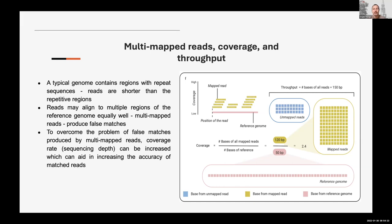Throughput is the number of bases in all the reads — counting letters A, C, T, G in your FASTQ file. In our example, throughput is 150 base pairs but 120 are mapped. So what happened to 30 base pairs? They were not mapped — those are called unmapped reads (shown in blue). There are several reasons: maybe they have too many mismatches and the aligner cannot confidently say where the read is coming from, so it gives up.